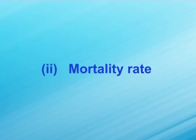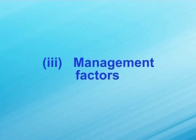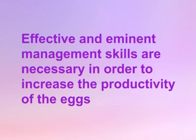Second is mortality rate. Mortality rate may increase due to the onset of diseases, predation and even high temperature. The mortality rate of small chicks is about 4%, that of growers is about 15%, and that of layers is about 12%. Third is the management factors — effective and eminent management skills are necessary in order to increase the productivity of the eggs.